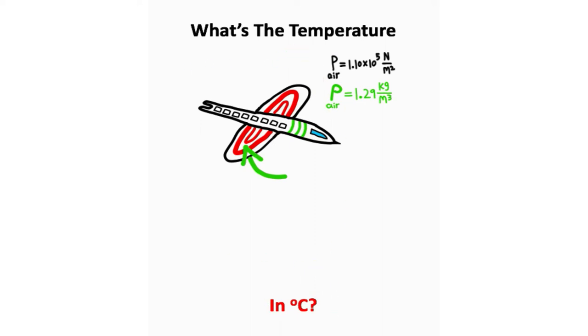So what we need is an equation that's going to relate everything, and the equation that I'm going to use is this one. Pressure is equal to density times the gas constant R times temperature. What we can do is solve for temperature in this problem by dividing both sides by the density and the gas constant.